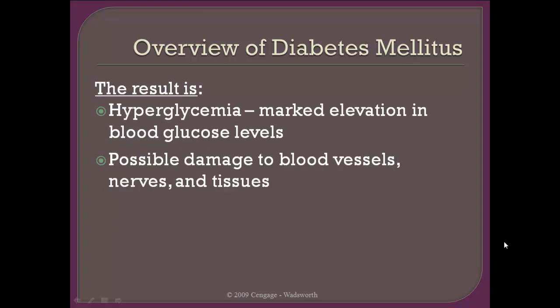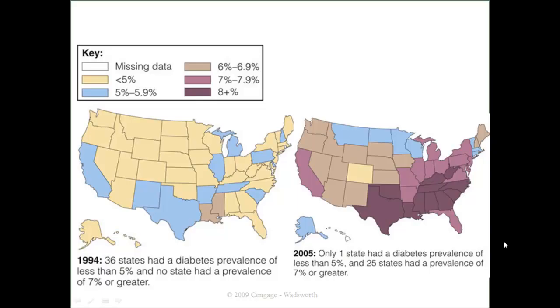That condition of high levels of glucose in the blood is called hyperglycemia. Over time, when a person has hyperglycemia, there will be damage to the blood vessels, nerves, and tissue. Figure 26-1 shows how rapidly diabetes has been increasing — just take a look at that on your own. Your jaw will drop.